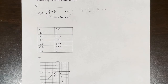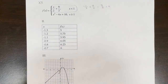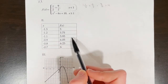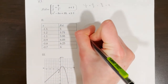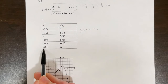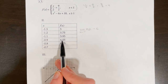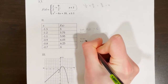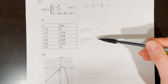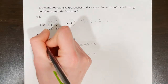For the second table, I'm looking for the limit as x approaches negative 1. Approaching from the left — negative 1.3, negative 1.2, negative 1.1 — f of x gets closer and closer to 6, so the left-sided limit is 6. From the right — negative 0.7, negative 0.8, negative 0.9 — y values also approach 6. Since both sides match, the limit exists and equals 6. This function does not meet our criteria.